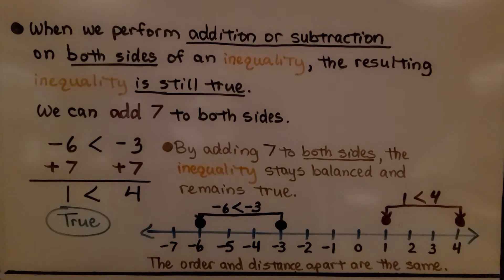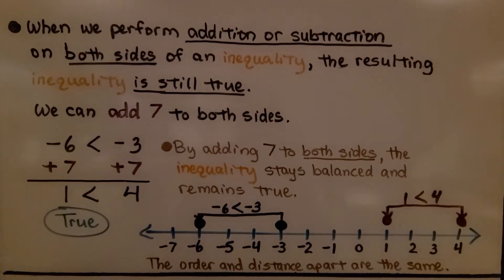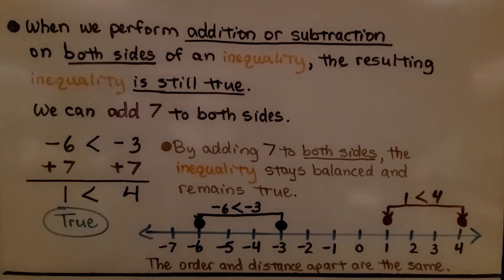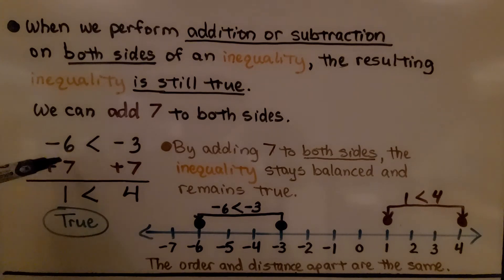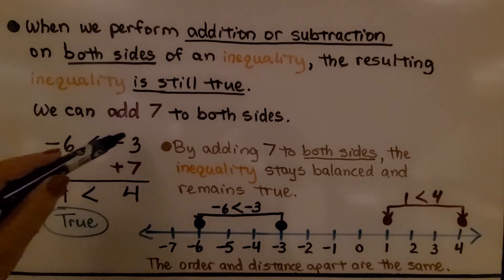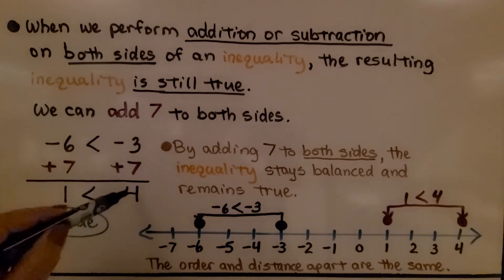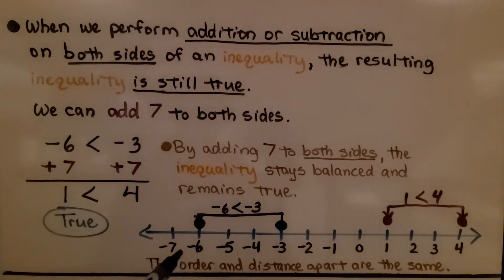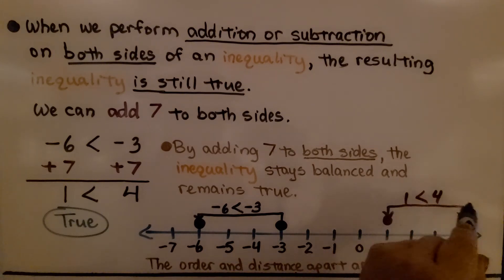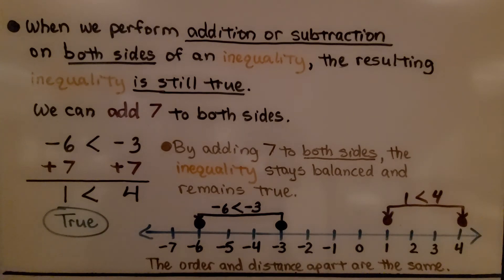When we perform addition or subtraction on both sides of an inequality, the resulting inequality is still true. We can add 7 to both sides. Negative 6 plus 7 gives us positive 1, and negative 3 plus 7 gives us positive 4. Negative 1 is less than 4. By adding 7 to both sides, the inequality stays balanced and remains true. We have negative 6 less than negative 3, and 1 less than 4 — the order and distance apart are the same.